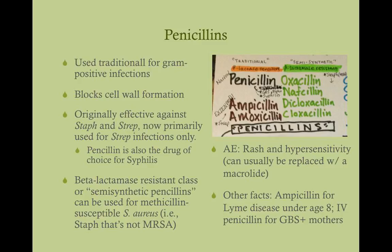The adverse effects of penicillins are rash and hypersensitivity. A good chunk of the population are allergic to penicillin — if that's the case, we can generally replace with a macrolide. Ampicillin is used for Lyme disease in patients under 8; normally we would use doxycycline, but in patients under the age of 8, we prefer ampicillin. And as mentioned, IV penicillin is given for group B strep mothers.